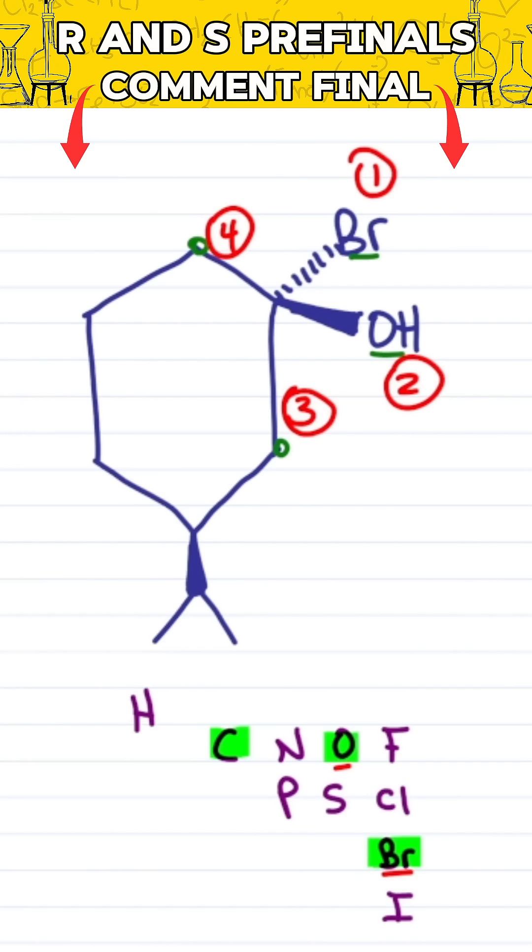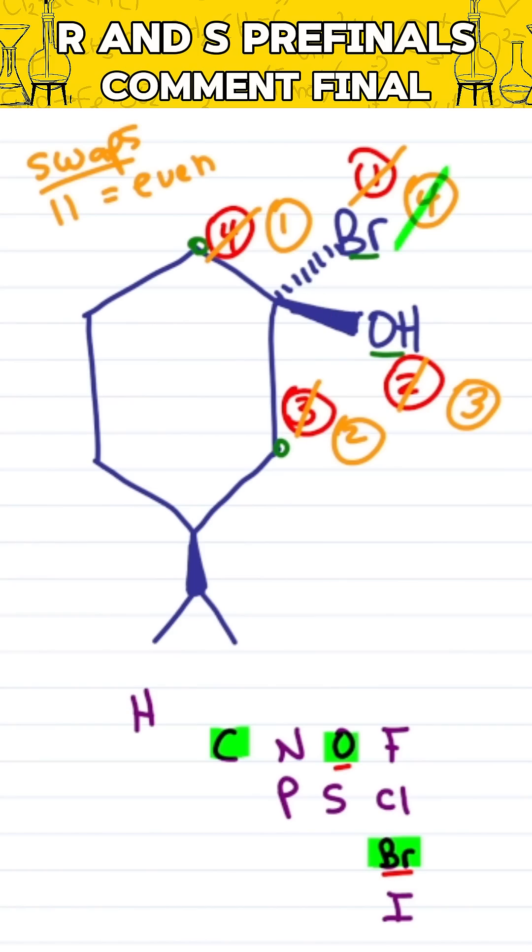Number four is not in the back, so we'll swap twice. Swap one puts four in the back, swap two is anything. Now I can cross out number four, trace an arc from one to two to three, and I get S.